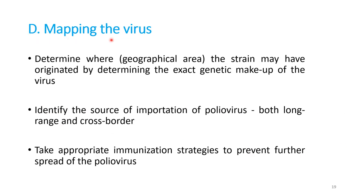The last step in AFP surveillance is mapping the virus. This means determining where the strain may have originated by determining the exact genetic makeup of the virus, to identify the source of importation of the polio virus — whether from cross-border importation — and to take appropriate immunization strategies to prevent further spread.